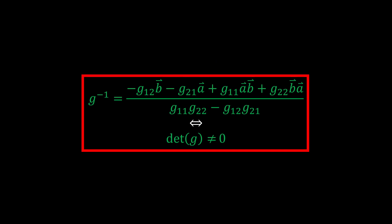Therefore, a geometric number G in this extended system has a well-defined inverse if and only if its determinant is not zero.